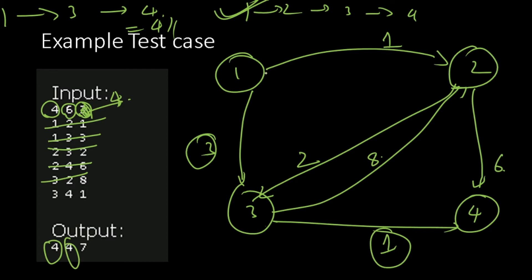The third possibility is we go from 1 to 2 and then from 2 to 4. So 1 to 2 then from 2 to 4, here the answer is 1 plus 6 equals 7.